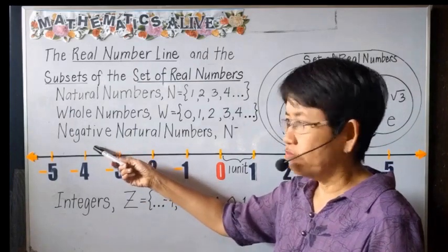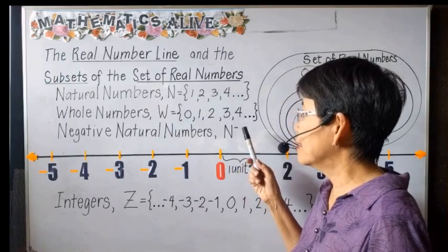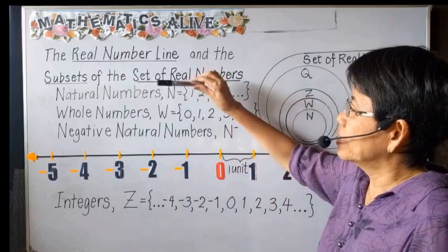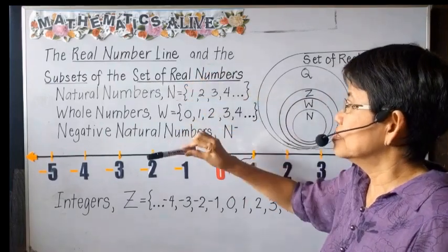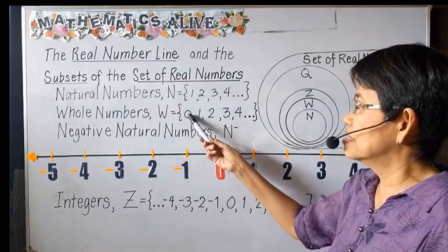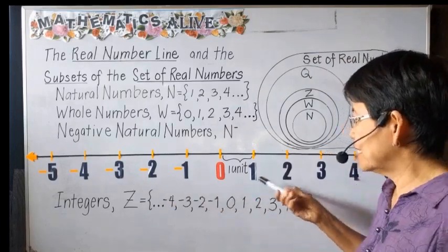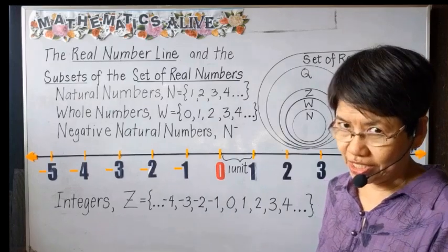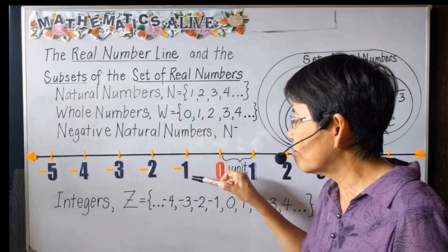We also add the set of negative natural numbers, represented by N-negative. If you combine the set of natural numbers, the set of negative natural numbers, plus zero, we have the set of integers. So what you are seeing along the number line are the set of integers.